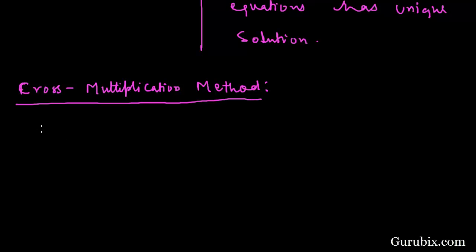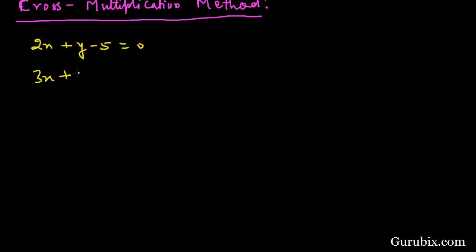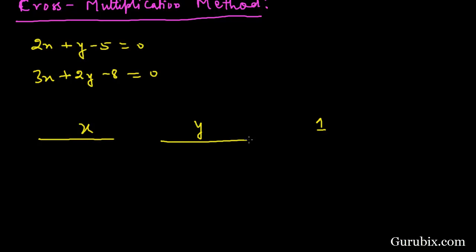We shall write the pair of linear equations in standard form: 2x + y - 5 = 0 and 3x + 2y - 8 = 0. We write x, y, and 1. Under x, we shall forget the x terms and write the coefficients of y and the constant terms.